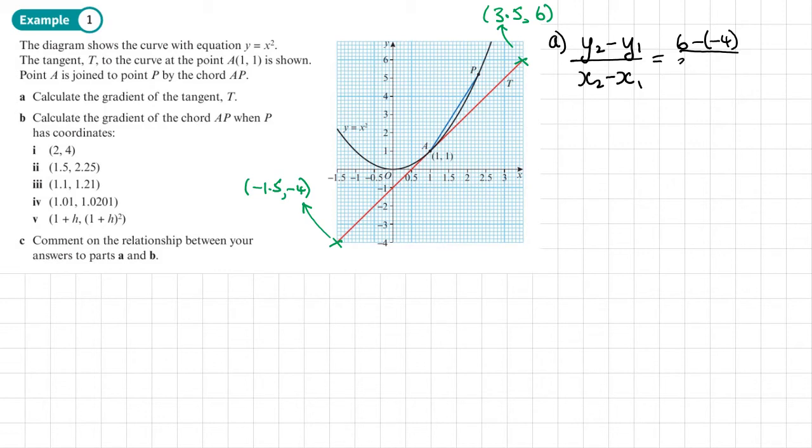That becomes 10 over 5, which is 2. So that red line has a gradient of 2.